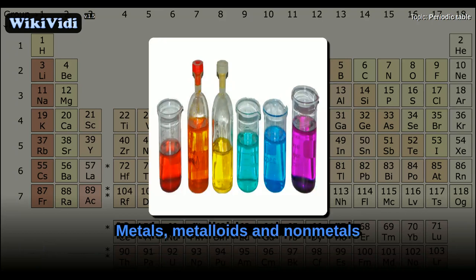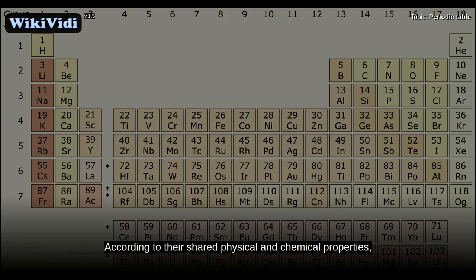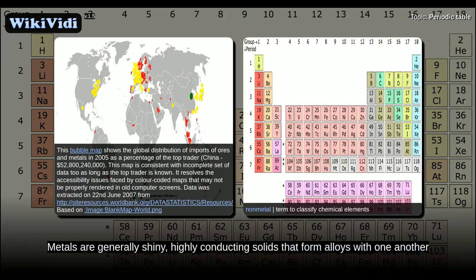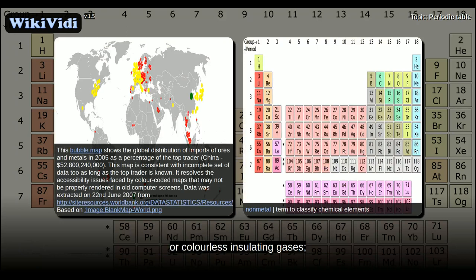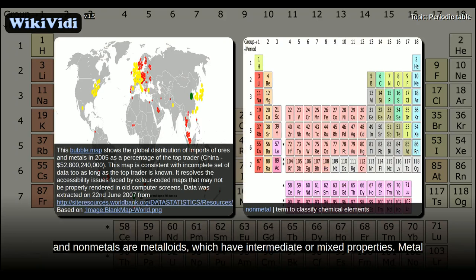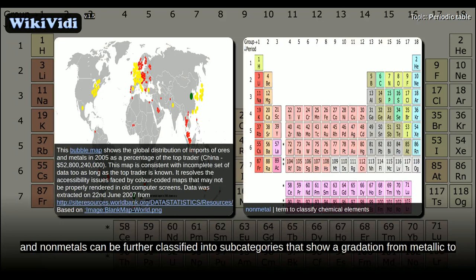According to their shared physical and chemical properties, the elements can be classified into the major categories of metals, metalloids, and non-metals. Metals are generally shiny, highly conducting solids that form alloys with one another and salt-like ionic compounds with non-metals. The majority of non-metals are colored or colorless insulating gases. Non-metals that form compounds with other non-metals feature covalent bonding. In between metals and non-metals are metalloids, which have intermediate or mixed properties. Metals and non-metals can be further classified into subcategories that show a gradation from metallic to non-metallic properties.